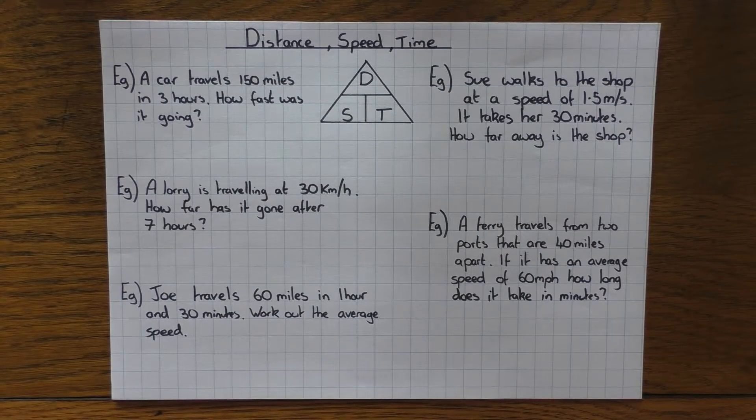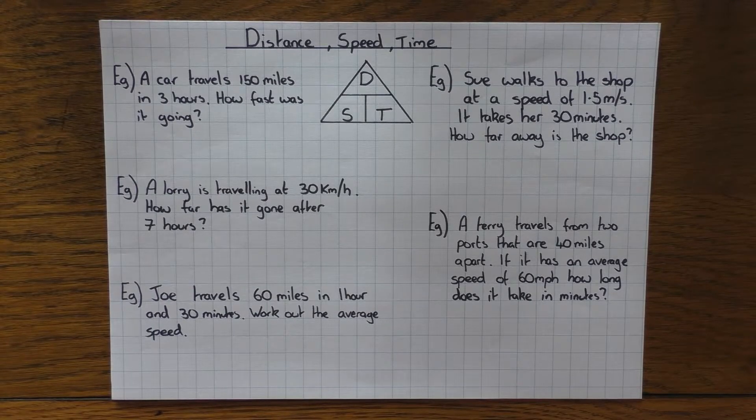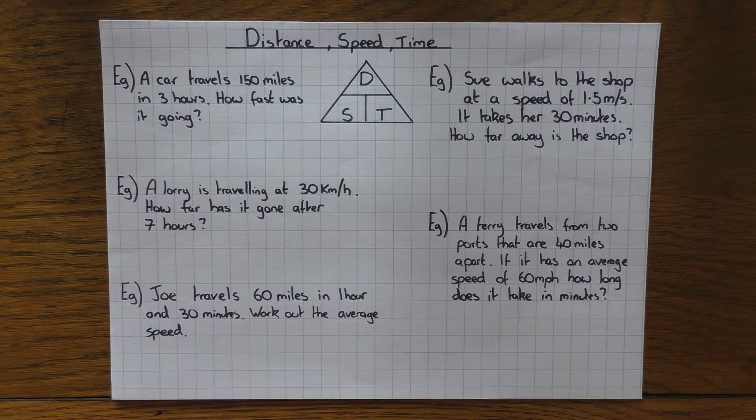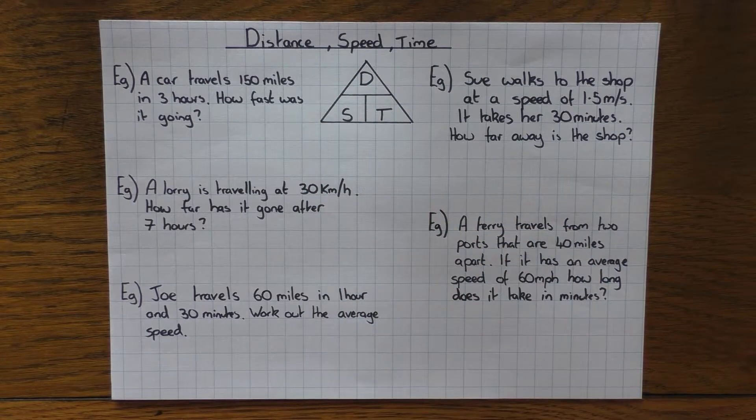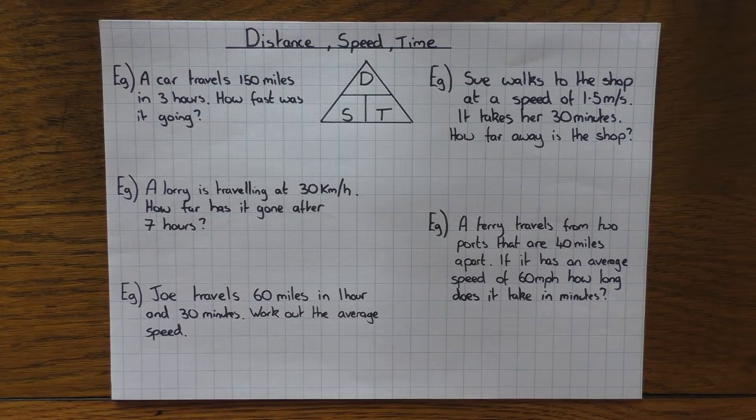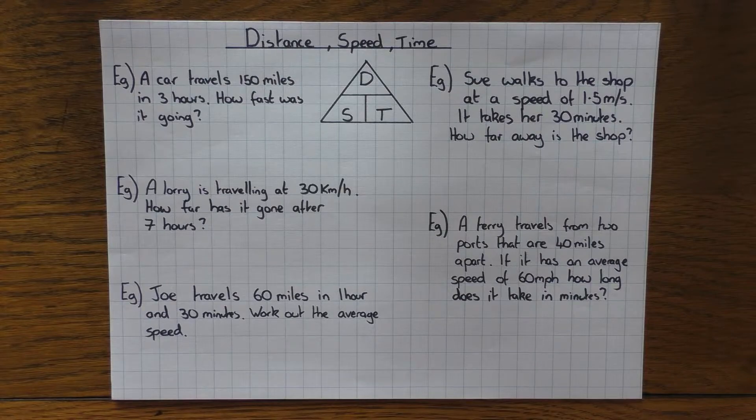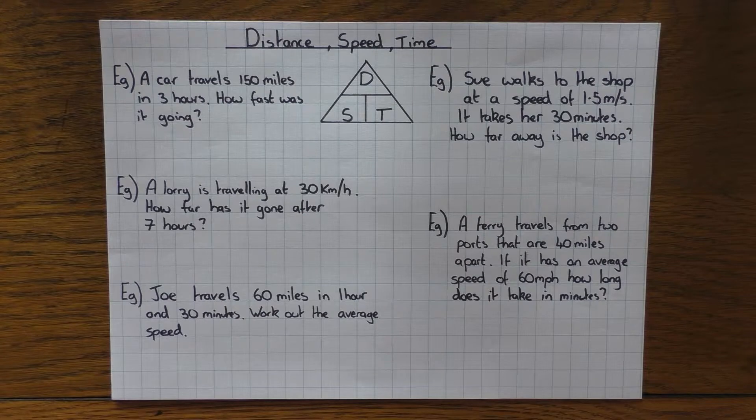Hi guys, in this video we're going to have a look at distance, speed, time and how we calculate each of those when given the other two. As you can see here we have the triangle. I believe science also used this and that's to help us figure out the calculation needed to work out whichever one we're trying to work out. So how does it work? Well let's have a look at some examples and go from there.